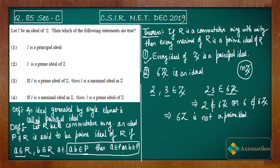So 6Z is an ideal but it is not a prime ideal. Therefore the second statement is incorrect. Now let us talk about the third statement: if I is a prime ideal of Z, then I is a maximal ideal in Z.